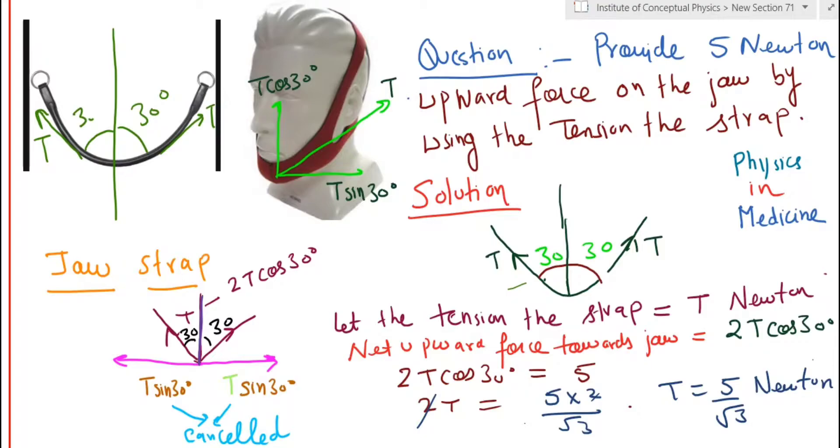So what is providing the jaw support is 2T cos 30. Put 2T cos 30, which is what we need, the upward force equal to five. You find the tension in the strap we have to provide so that the jaw remains intact and is sufficiently capable of providing the tension of, or a force of, five Newtons in the upward direction to the jaw.